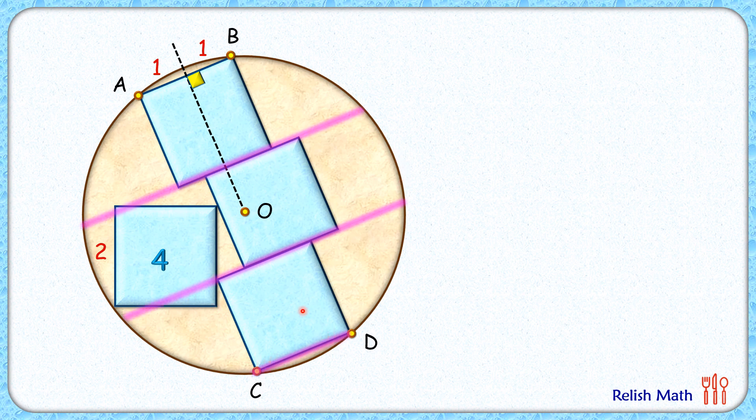And we know that in a circle, the perpendicular bisector for parallel lines is common. So when we extend this perpendicular bisector, it will be perpendicular bisector for CD also.